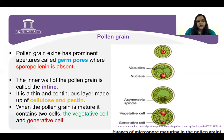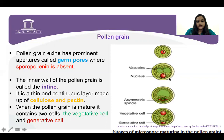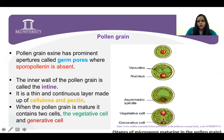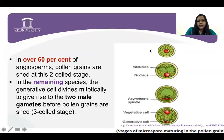The exine is made up of sporopollenin and the inner one is of cellulose and pectin. When the pollen grain is mature, it contains two cells — this is a gradual process of maturation. When the pollen grain is mature, it is in a two-cell condition: one is the vegetative cell and the second one is the generative cell. In almost 60% of angiosperms, pollen grains shed at the two-cell condition.